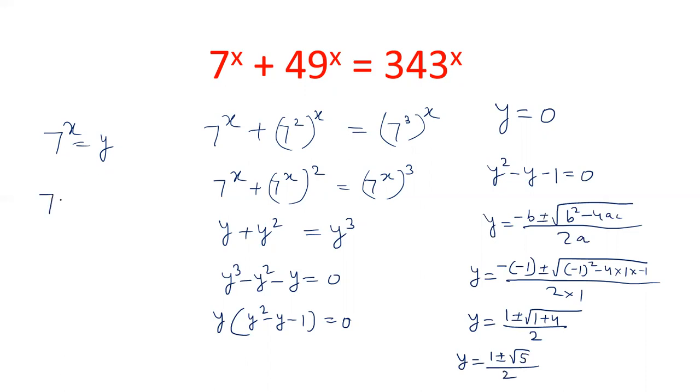So value of y is either 0, 7 power x is 1 plus under root 5 by 2, or 7 power x is 1 minus root 5 by 2. 7 power x equals 0 is not possible.